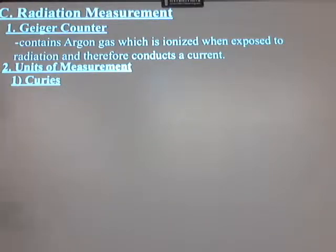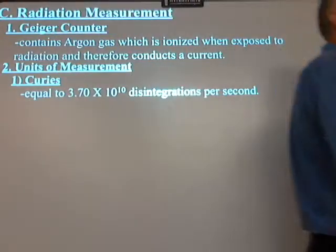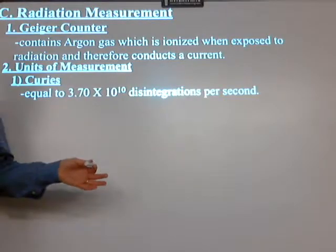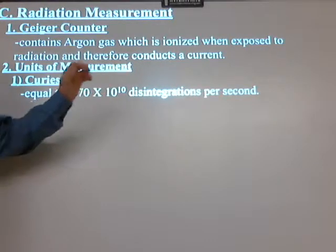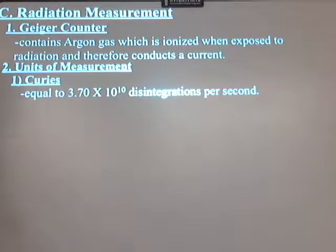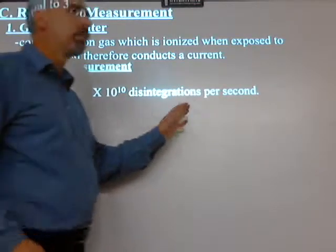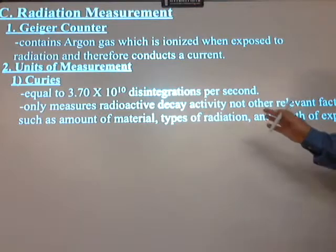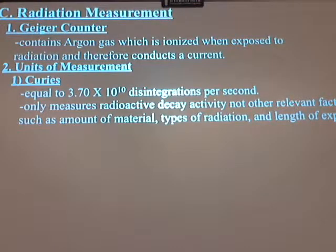Depending on where you go to school or which class you take, you may use different units, but these are the ones I want to explain. A Curie is the equivalent of 3.70 times 10 to the 10th disintegrations per second. In other words, that's how many particles of radiation are being given off as it disintegrates. This only measures the radioactive decay activity, not other relevant factors — so that may be one reason they reported Chernobyl in Curies.